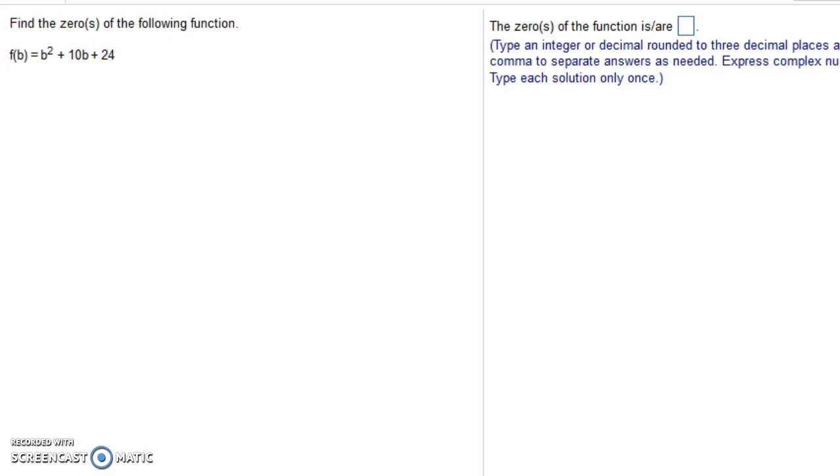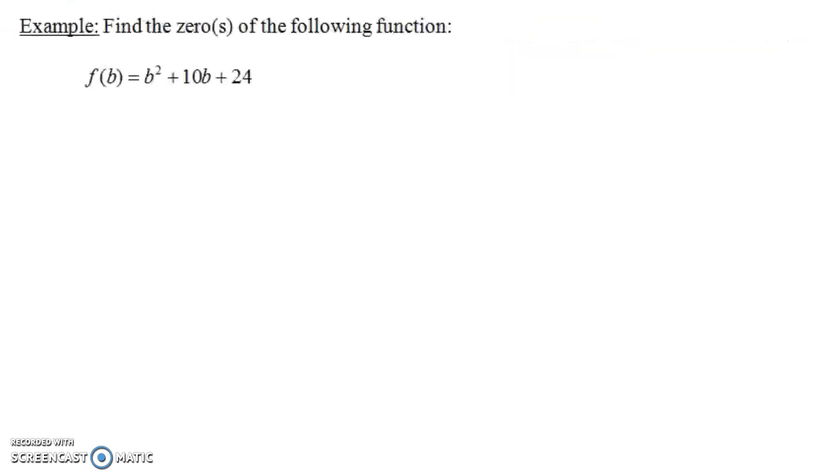Okay, let's move on to another problem. This says find the zeros of the function. Now this time we're not given the graph of the function. We are given a formula for our function. And the formula involves b's instead of x's, but that's no problem. The question is, what inputs would give you an output of zero? So I've typed out the problem over here. Find the zeros of this function: f(b) equals b squared plus 10b plus 24. So what inputs for b can we put in that will give us an output of zero?